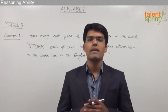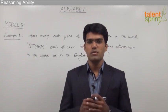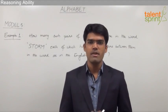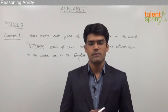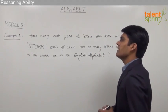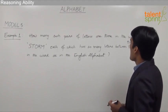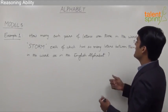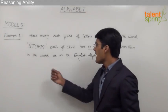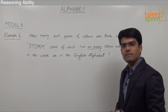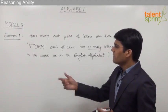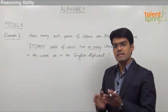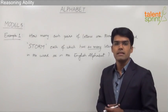Let us now look at the fifth model from the topic alphabet, where we are supposed to find out the number of pairs in the given word which have as many letters between them as in the English alphabet. The question is: how many such pairs of letters are there in the word STORM, each of which has as many letters between them in the word as in the English alphabet?